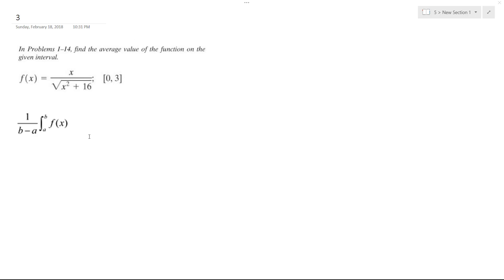We want to find the average value of the following statement. So what we want to do is use the formula here. We're going to have 1 over 3 minus 0, because this is A, this is B. 0 is A, B is 3.